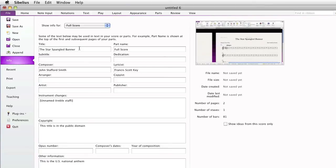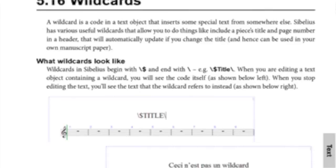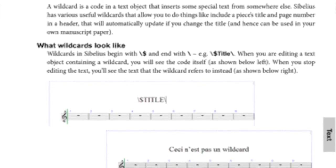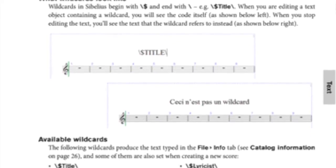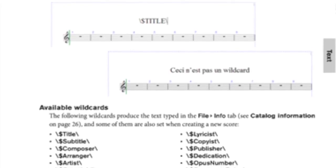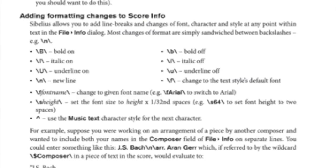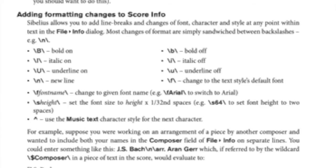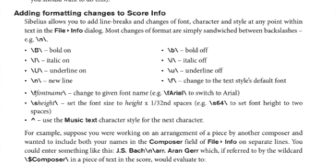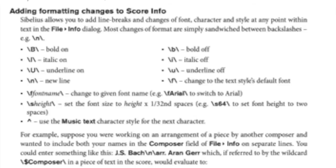This is where wildcards can come in handy. A complete list of wildcards is listed in the Sibelius reference in Section 5.16. There is quite an extensive list, which can be used to great advantage. You can even apply formatting to your wildcards, so if you think you have good reasons to use wildcards in your score, I'd encourage you to read more about them.